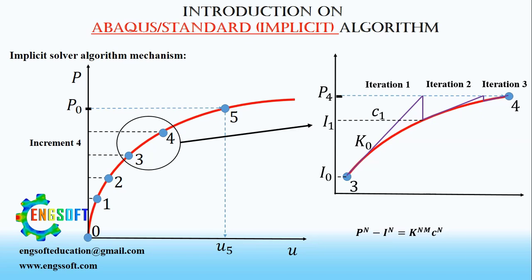Sometimes, Solver cannot converge to a solution, even after several iterations. Let's observe the Implicit Solver mechanism in terms of flowchart.